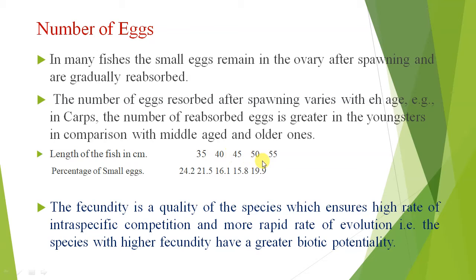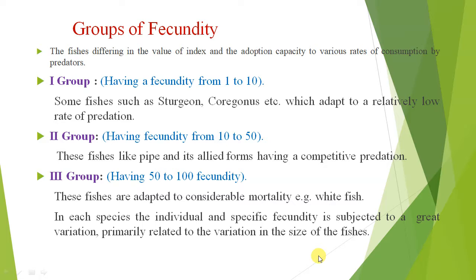You can see the length of species in cm and the percentage of small eggs. Fecundity is a quality of species which ensures a high rate of inter-species competition and a more rapid rate of evolution. Therefore, species with higher fertility have a greater biotic potentiality.